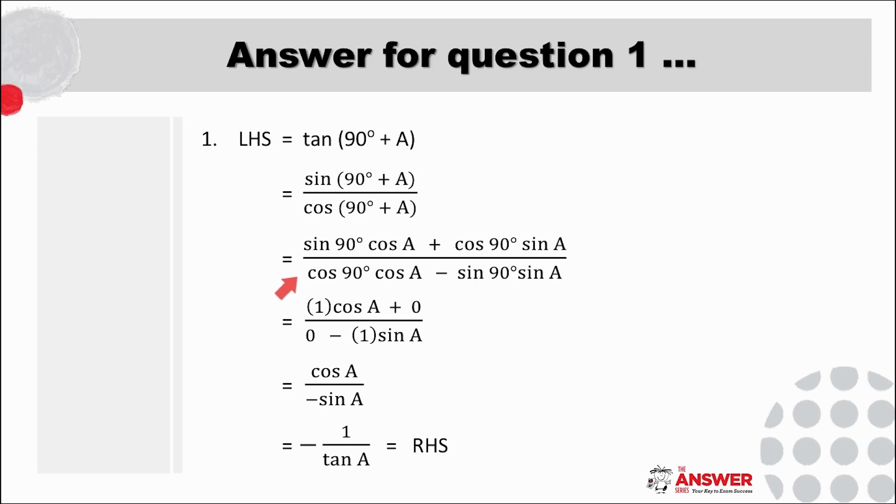As you look further through this solution you will see it also tests your knowledge of axes angle values. So here with sin of 90 and cos of 90, remember to use your graphs to help you if you need to double check rather than reaching for your calculator. This then simplifies to cos over negative sine which is the inverse of tan which is the right hand side of the equation.